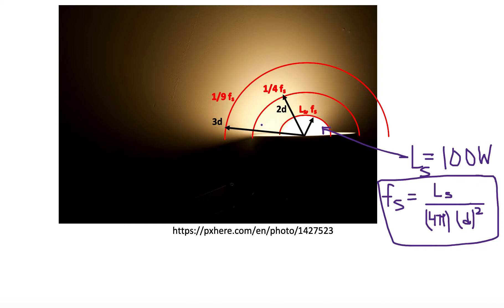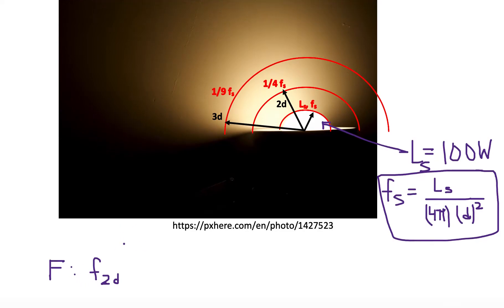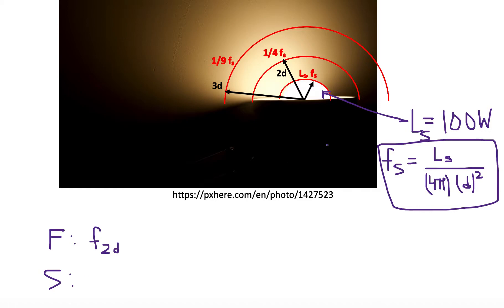Now we want to find the flux at a distance of 2d. Here d is the diameter of the light bulb. Say you want to sit 2d away from the light bulb to read a newspaper — you need to be really close because it's dark in the room. We want to find out how much light falls on the newspaper at a distance of 2d. We're given 100 watts for our luminosity, and we know the flux at the surface is the luminosity divided by 4πd² by definition.